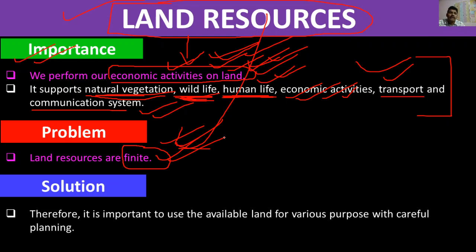Kahin na kahin ocean ke kinaare jo coastal area hamara hai, wahan pe land dhere dhere ocean ke niche ja raha hai, kyunki jo sea level hai woh rise ho raha hai due to global warming. Usse glacier pighal raha hai, sea level mein vridhi ho rahi hai, toh coastal area mein jo land hai woh sea ke niche doob raha hai.